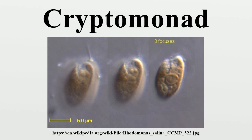Cryptomonad flagella are inserted parallel to one another, and are covered by bipartite hairs called mastigonemes, formed within the endoplasmic reticulum and transported to the cell surface. Small scales may also be present on the flagella and cell body.